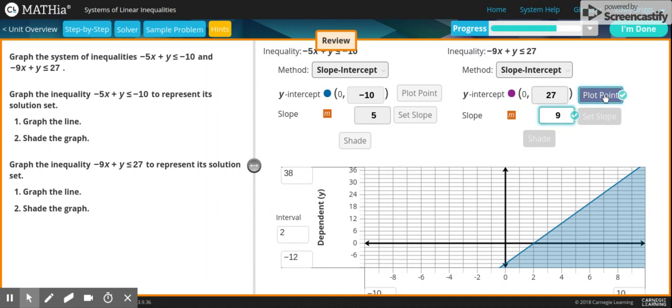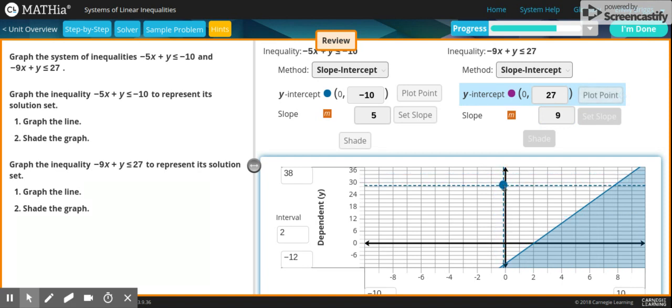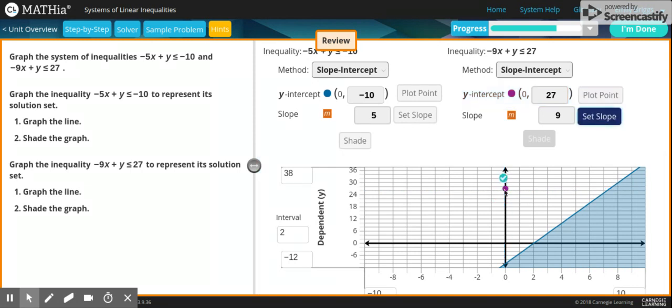Then you're ready to plot your point. That's going to be somewhere right around in there. If it's not perfect, it'll adjust it to where it wants it to go. After that, you'll set your slope. You want to set your slope to positive 9 so it's not going down, it's going up.